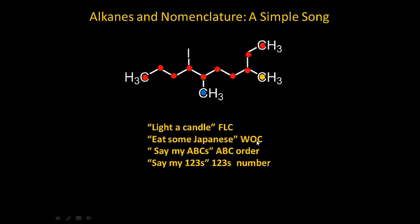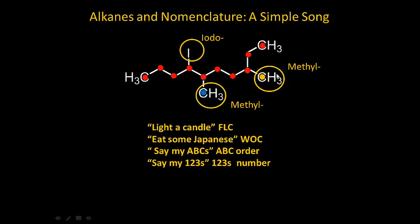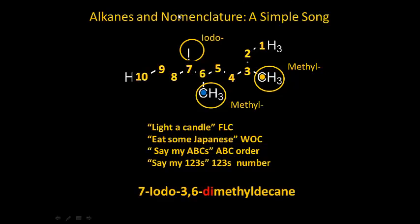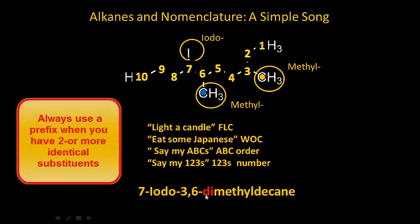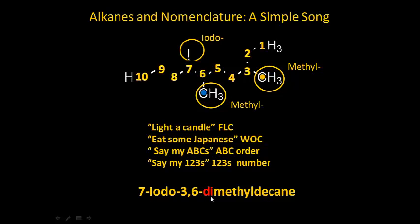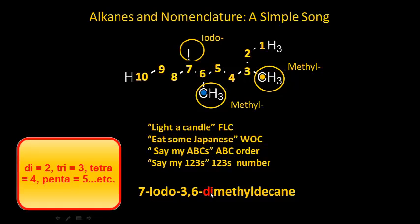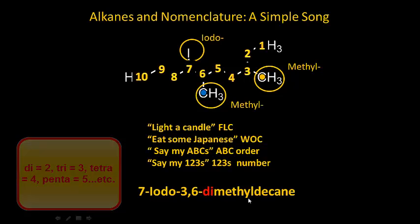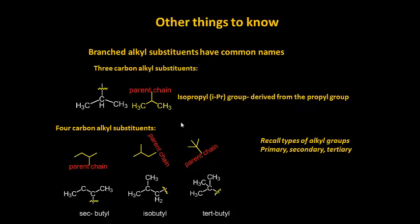Now I need to figure out what's on the chain - eat some Japanese, wok, what's on the chain. I have an iodine here, a methyl here, and also a methyl here. Now I say my ABCs - iodine comes before methyl, I comes before M. Then I say my 1, 2, 3s. I have a methyl at carbon number 3, methyl at carbon number 6, and iodine at carbon number 7. So this becomes 7-iodo-3,6-dimethyl. I use the prefix di because I have two identical groups. If I had three identical groups I'd use tri, four would be tetra. So the full name is 7-iodo-3,6-dimethyldecane.